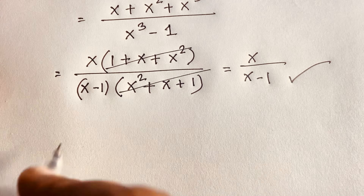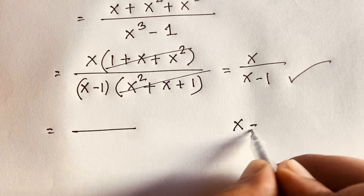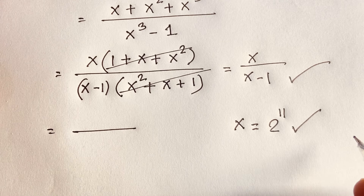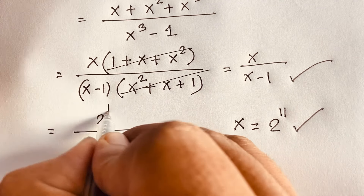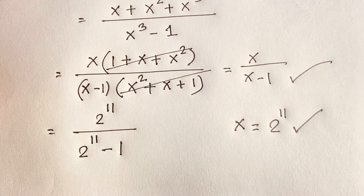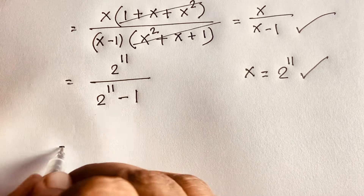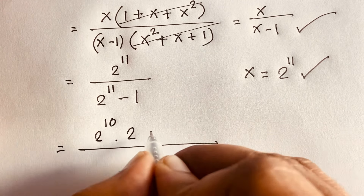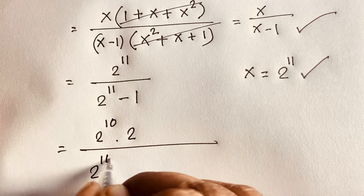Now recalling that x equals 2 to the power 11, the answer is 2 to the power 11 over 2 to the power 11 minus 1. To evaluate this further, I can write 2 to the power 11 as 2 to the power 10 times 2.